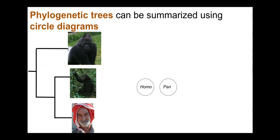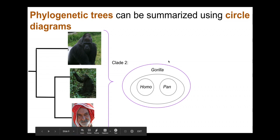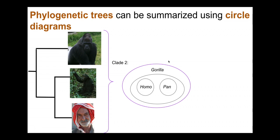We'll start off with a fairly small example — just humans, chimps, ignoring bonobos and gorillas. In the circle diagram for these three species, we draw a circle around Homo sapiens and Pan individually, as they are species. We then draw a circle around both to indicate they share a recent common ancestor and are part of a clade. Gorillas occur at another layer out, and we draw a circle around Gorilla, Homo, and Pan to indicate they are all part of a clade.